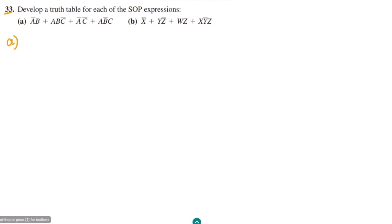Let us talk about part A of our question. The domain for part A is A, B, and C. We can see that this expression is not in the standard form. The expression is A prime B plus A B C prime plus A prime C.